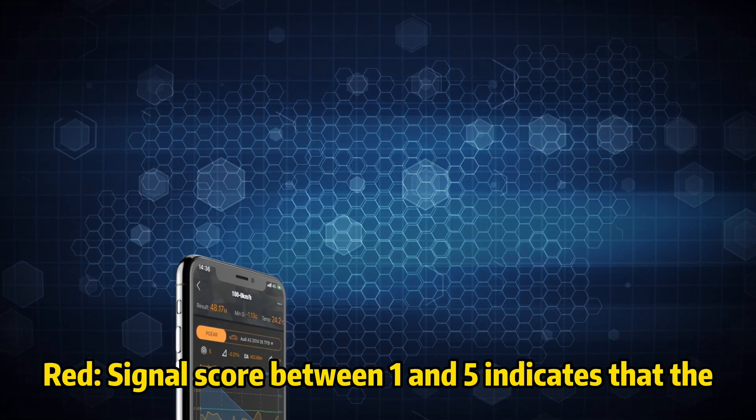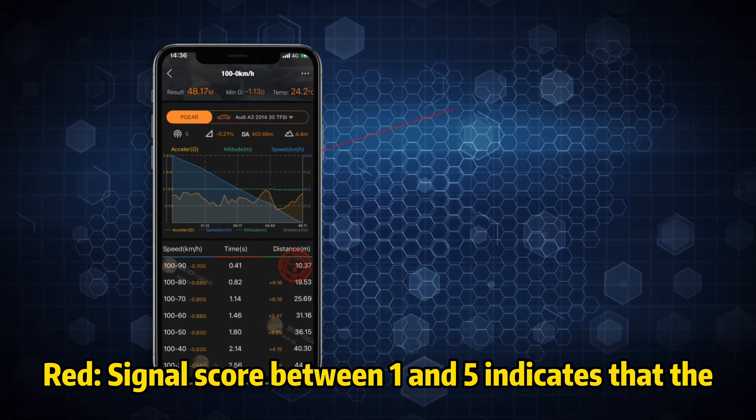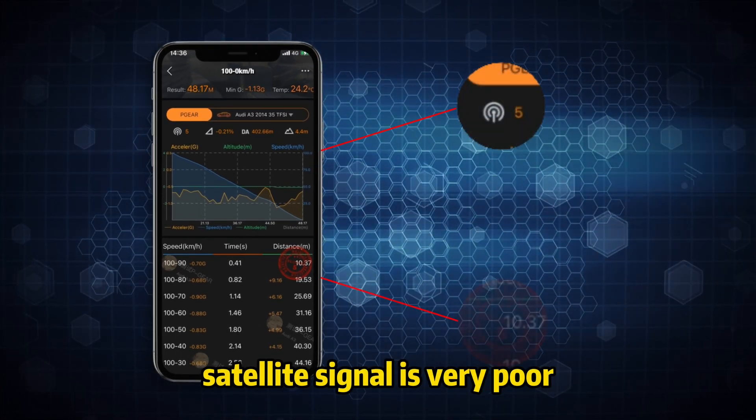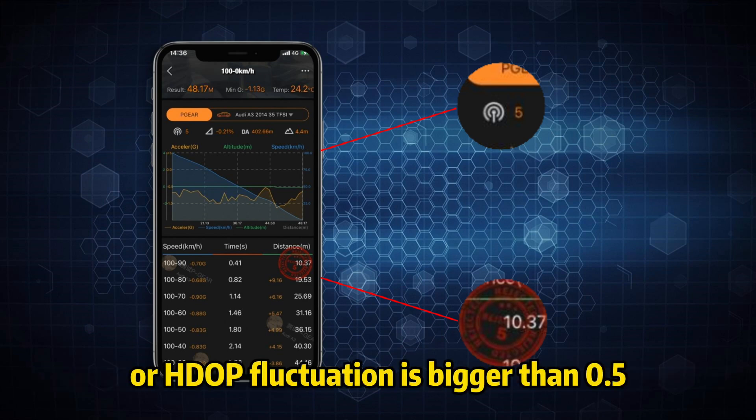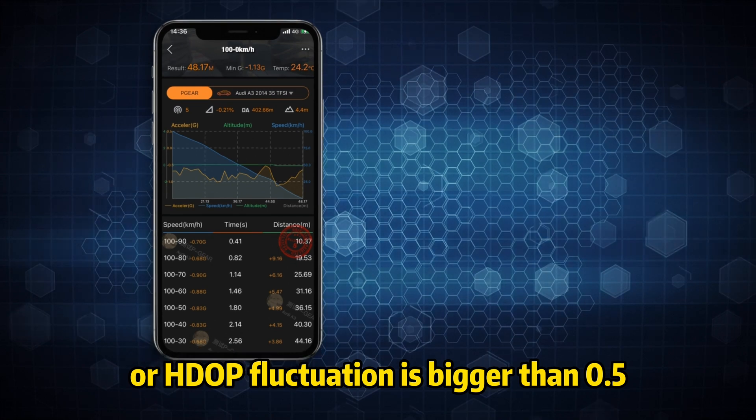Red signal score between 1 and 5 indicates that the satellite signal is very poor. More than two data packets are lost or HDOP is above 1.2 or HDOP fluctuation is bigger than 0.5.